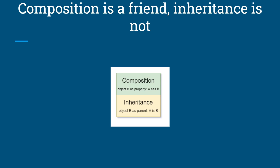Composition over inheritance is a programming concept stating, basically, that composition is preferred to inheritance. The concept is usually used in the context of polymorphism, but it's generally true. The reason for this is that inheritance leads to rigidity, while composition leads to flexibility.